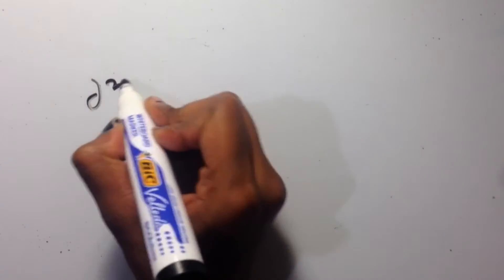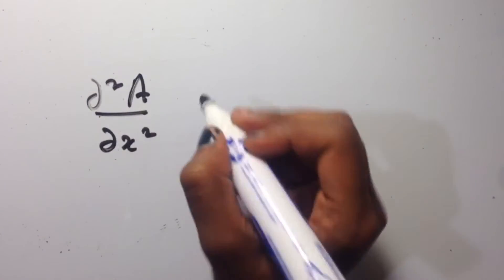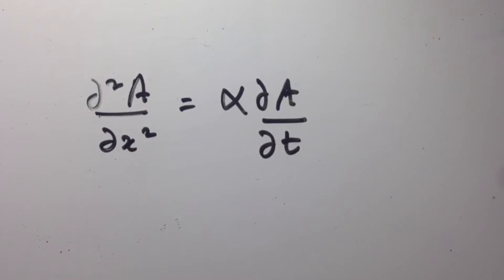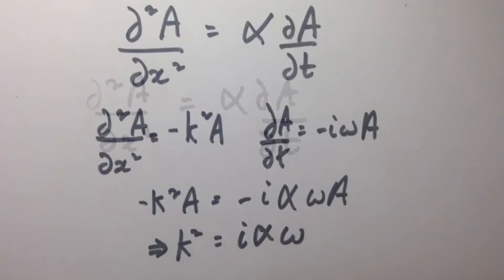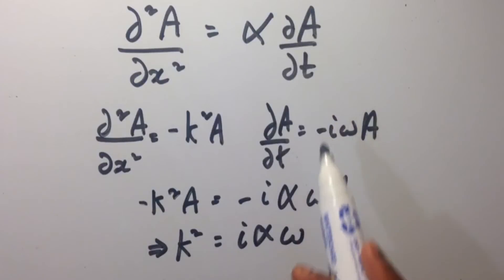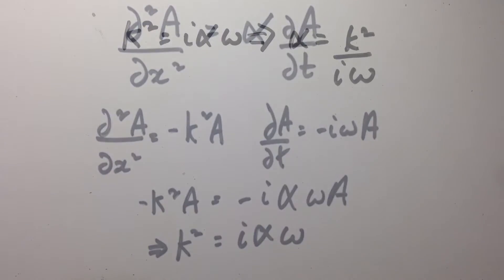Let us now consider the equation d squared A over dx squared equals alpha dA over dt. With this being our general solution and differentiating twice with respect to x gives us minus k squared A. And differentiating once with respect to time gives us minus i omega A. And plugging this back into our equation gives us k squared equals i alpha omega.